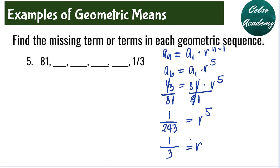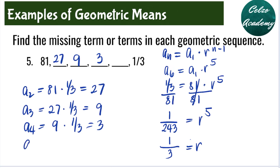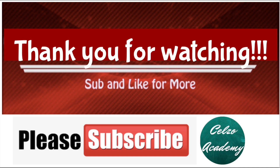Since the first term is 81, the second term is 81 times 1 third, which is 27. For the third term, 27 times 1 third is 9. For the fourth term, 9 times 1 third is 3. For the fifth term, 3 times 1 third is 1. And 1 times 1 third gives 1 third. So the four geometric means between 81 and 1 third are 27, 9, 3, and 1. Thank you for watching, and please consider subscribing to my channel at Celso Academy.